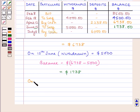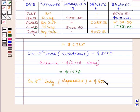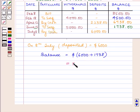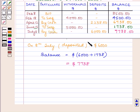On July 8th the amount deposited is equal to 6000 dollars, so the balance amount is 6000 dollars plus 1738 dollars, which is equal to 7738 dollars. So the next entry in the passbook is 7738 dollars on July 8th. This completes our table.